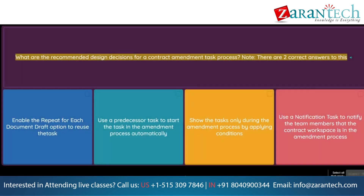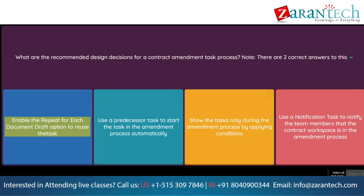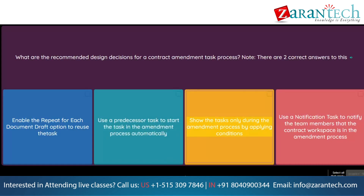Question: What are the recommended design decisions for a contract amendment task process? Note: there are two correct answers. Option 1: Enable the repeat for each document draft option to reuse the task. Option 2: Use a predecessor task to start the task in the amendment process automatically. Option 3: Show the tasks only during the amendment process by applying conditions. Option 4: Use a notification task to notify the team members that the contract workspace is in the amendment process.